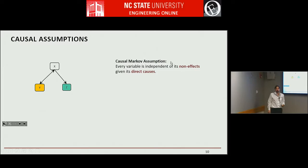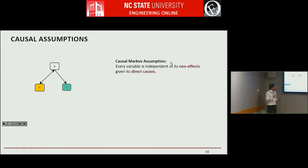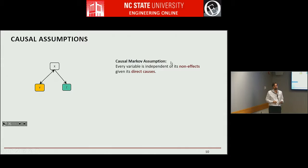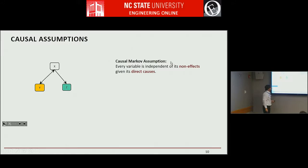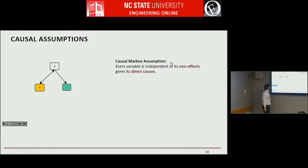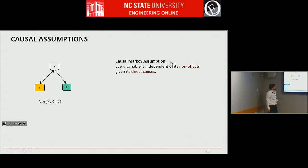We express the causal assumptions based on these dependencies and independencies. The main assumption we use in causal discovery is that every variable is independent of its non-effects, given its direct causes. This captures the scenario that if you know the direct causes of something, indirect causes don't give you additional information. For Z whose direct cause is X, Z given X should be independent of its non-effects — so we expect Y and Z to be independent given X.